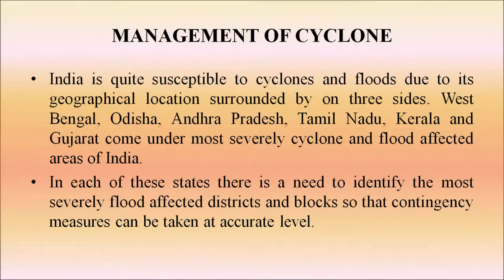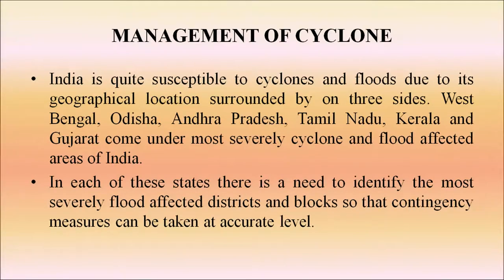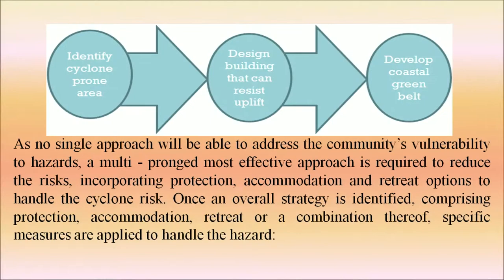India is quite susceptible to cyclones and floods due to its geographical location, surrounded on three sides by water. West Bengal, Odisha, Andhra Pradesh, Tamil Nadu, Kerala and Gujarat are among the most severely cyclone- and flood-affected areas. In each state, there is a need to identify the most severely affected districts and blocks so that contingency measures can be taken at an accurate level. A multi-pronged approach is required to reduce risk.